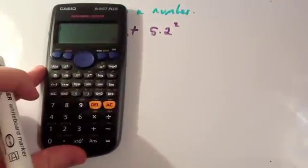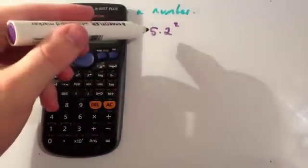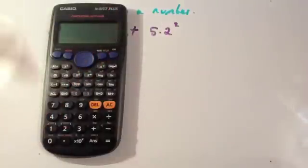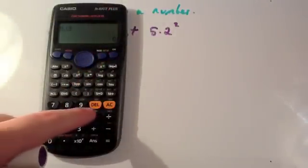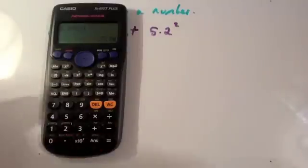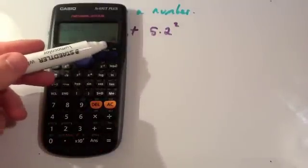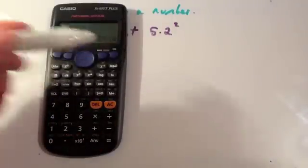Alternatively, you could use your calculator. Because you know squared means times by itself, you could just do 5.2 multiplied by 5.2, and press equals, and get 27.04.